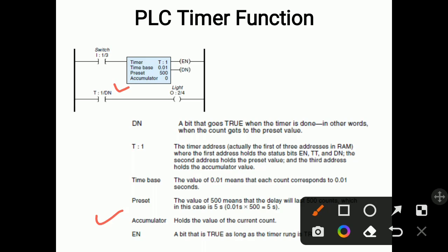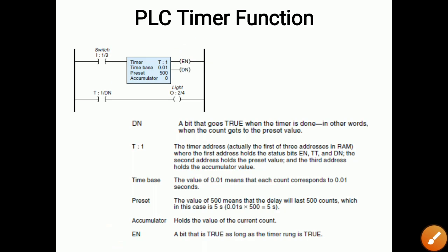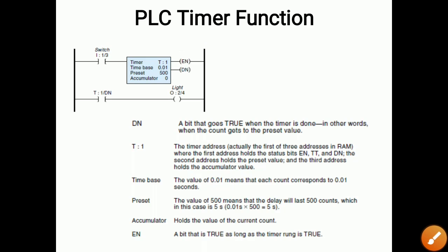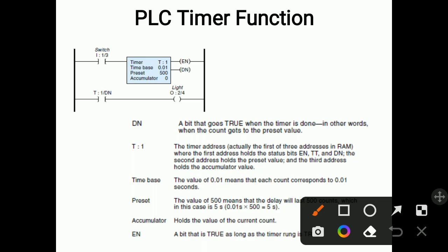The last parameter is EN. EN is a bit that is true as long as the timer rung is true — when this rung is true, EN is also true. So when the timer is on, EN is also on. When the accumulated value is complete, DN gets activated, the DN contact closes, and the light turns on.